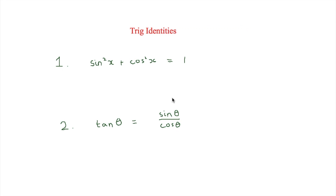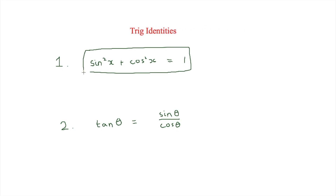This is Simon Stark and in this video we are looking at trig identities. There are two trig identities that we will be learning today, however there are more to come in future videos. The first one to look at is sine squared plus cos squared is equal to one. Just remember this equation and we will use it in some questions coming up.